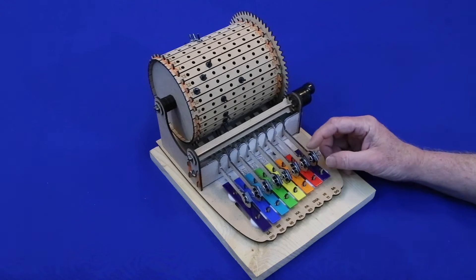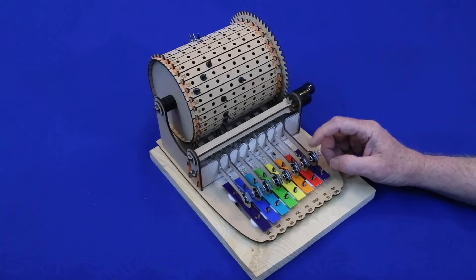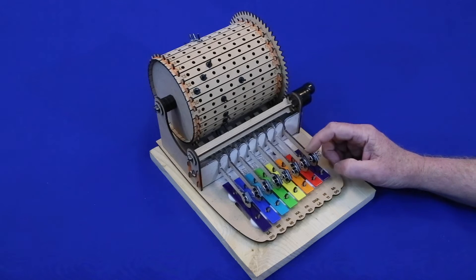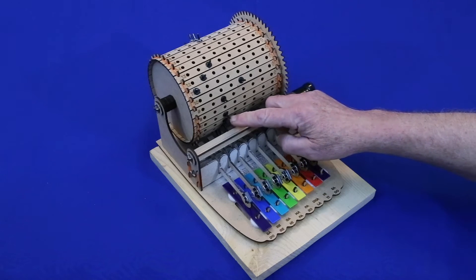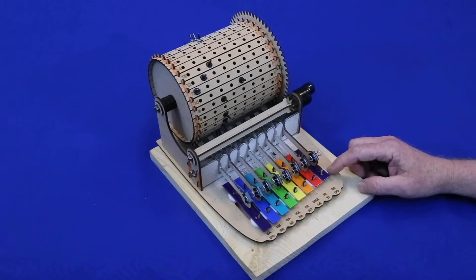The next thing I did was add a small binder clip to the end of each armature, thinking that the extra weight would help these fall fast enough so that all the notes would be played. It helped a little, but not much.